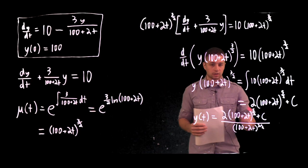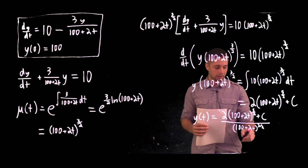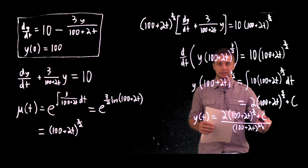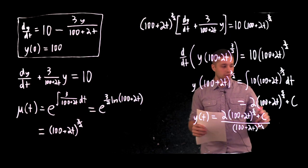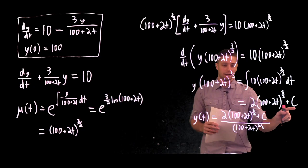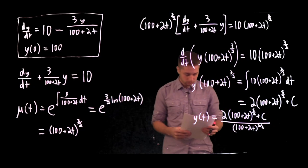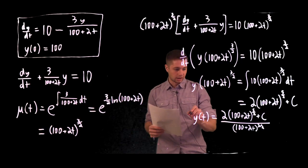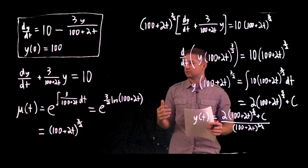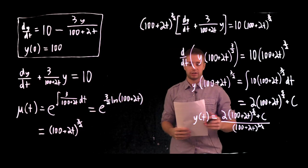Here's the important point: (100 + 2t)^(3/2) is not a constant — it depends on t — so we cannot absorb it into the constant C by renaming. That's why you must write the constant of integration immediately when you integrate, and not tack it on at the end, which would give a different result. This expression is our general solution.